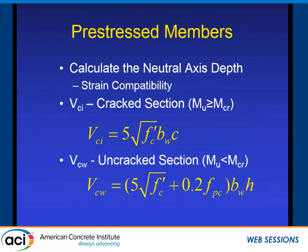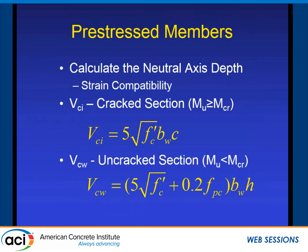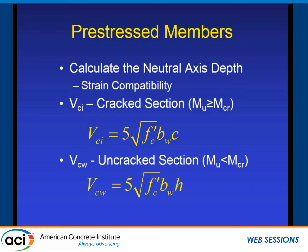For pre-stressed members, we can do the same thing. All we have to do is calculate the neutral axis depth using mechanics and strain compatibility. At any pre-stress level and applied moment, we can calculate C. On a cracked section, it's simply 5√f'c · BW · C — that's VCI. For an uncracked section, the entire section is together, and we can simplify to 5√f'c · BW, where C becomes H. It's a simplified and conservative approach.